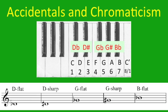An accidental placed before a note flags it as a note that does not represent one of the primary tones of the scale. A note with an accidental is a secondary tone. In C major, it is easy to see that the secondary tones are the black piano keys.